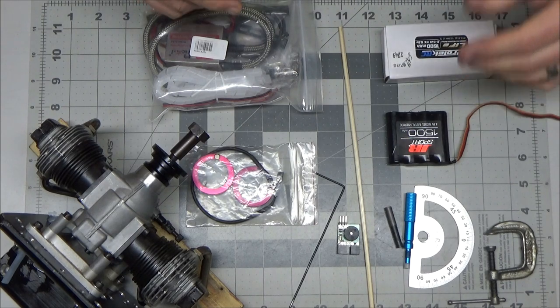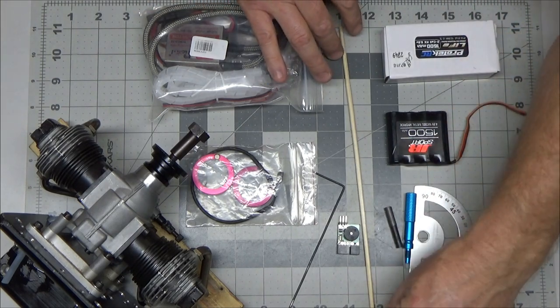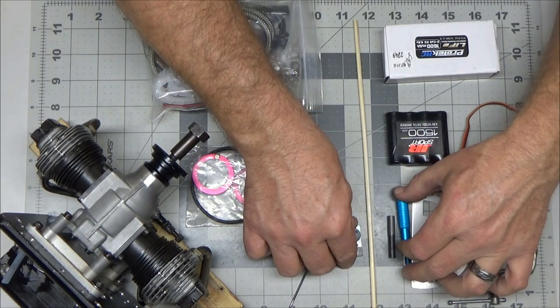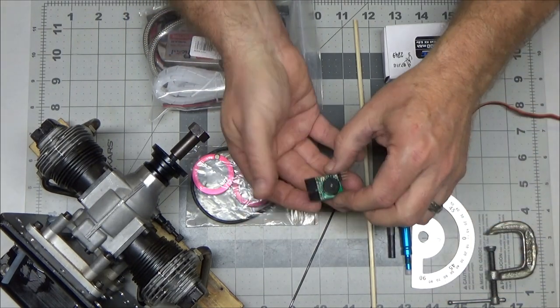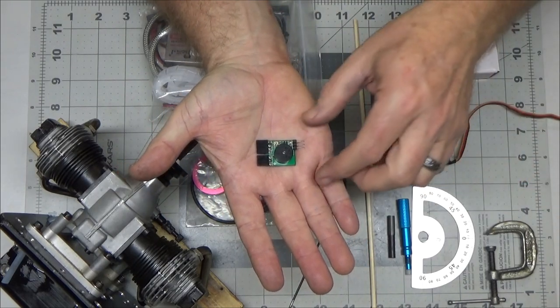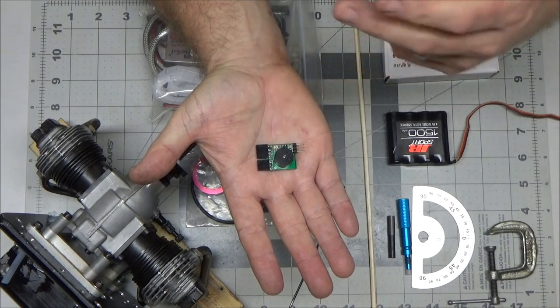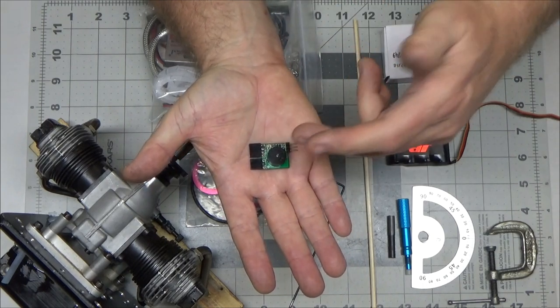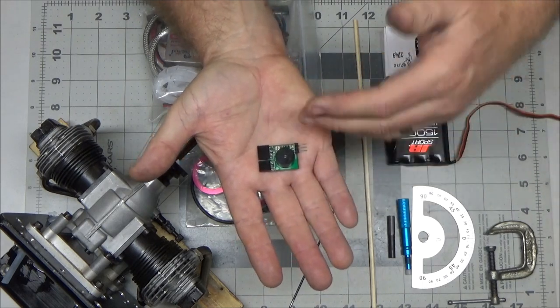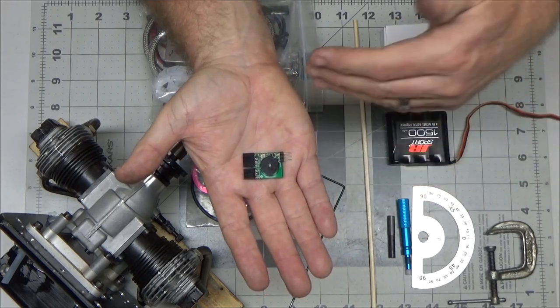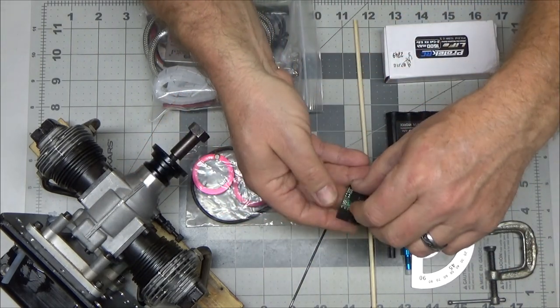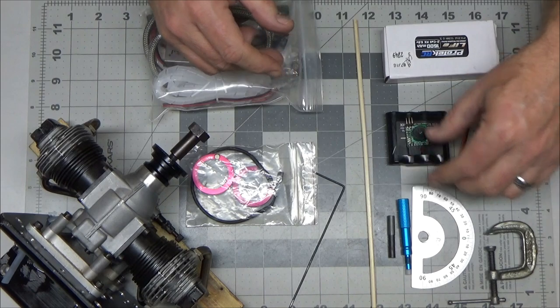Now I also have a standard nickel metal hydride 1500 milliamp hour 4.8 volt receiver pack here and that's specifically to power up the tester, the ignition tester that I've got. The ignition tester I've got here is just a small circuit board and you can buy these from Adrian, you buy them from numerous places. The testing kit usually comes with the circuit board, a piston stop tool and maybe a protractor but I just so happen to have a buddy that lives down south of me that had these items and he's letting me borrow them.